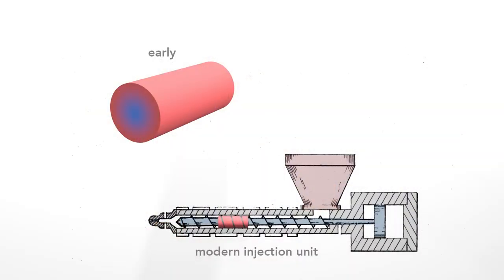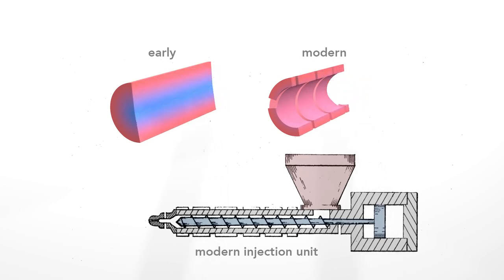In the earlier plunger-style machines, plastic filled completely the cylindrical barrel. But as I showed you, the plastic was not at a uniform temperature. The reciprocating screw overcomes this in three ways. First, in modern units, the plastic fills only the space around the shaft of the screw. This eliminates the cooler central region, leaving a thinner, evenly heated layer of plastic.